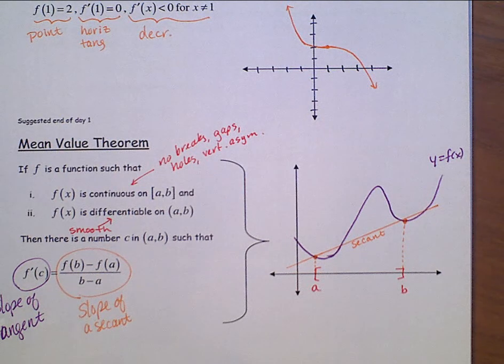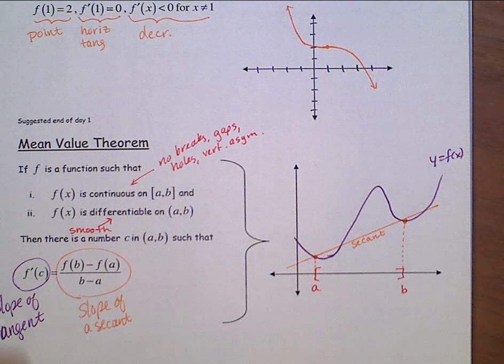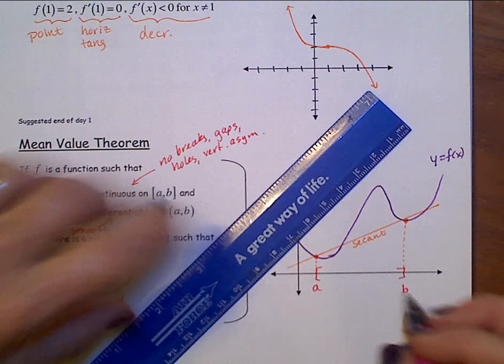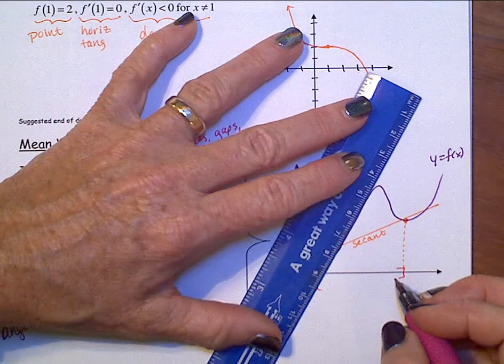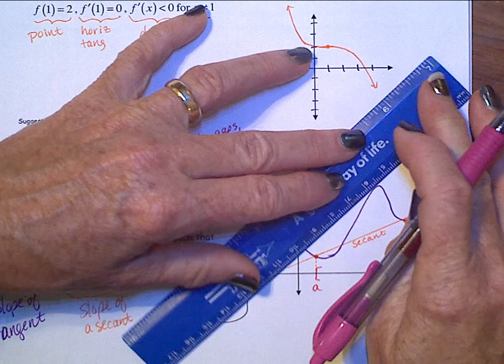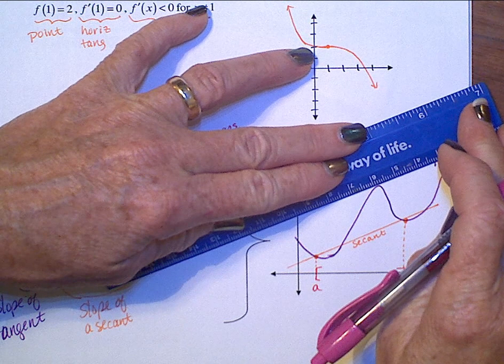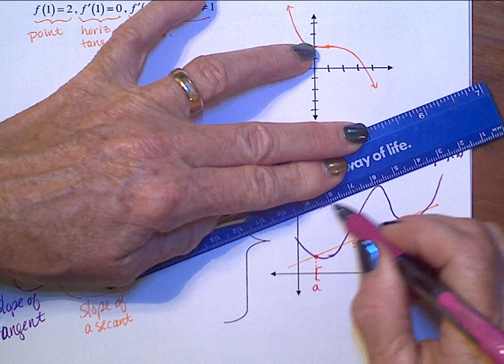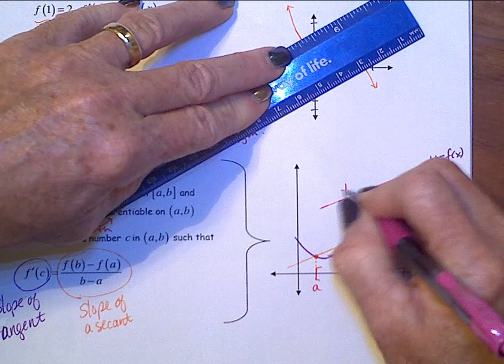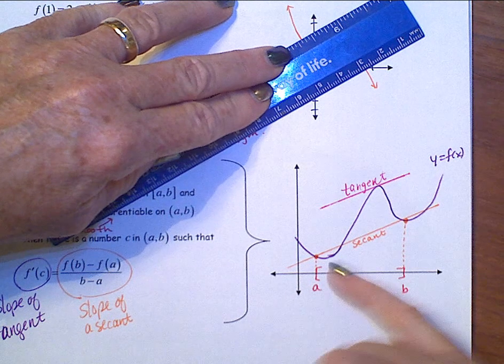Could you find somewhere in between a and b where the slope of the tangent along that curve is the same as the slope of the secant? Well, if I take my ruler and kind of imagine that being tangent lines, clearly not in here, but what about, oh, maybe right there? Sure. There's a tangent line that has the same slope as the slope of the secant.